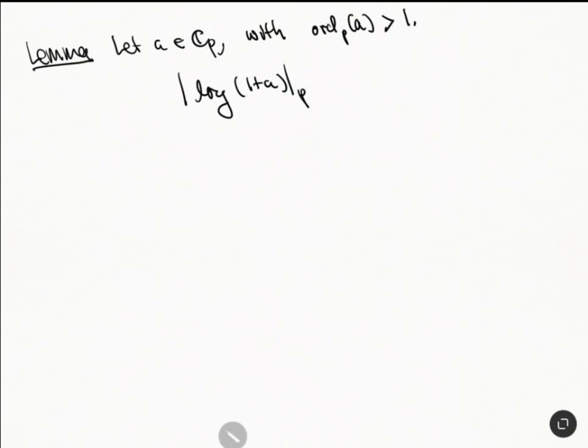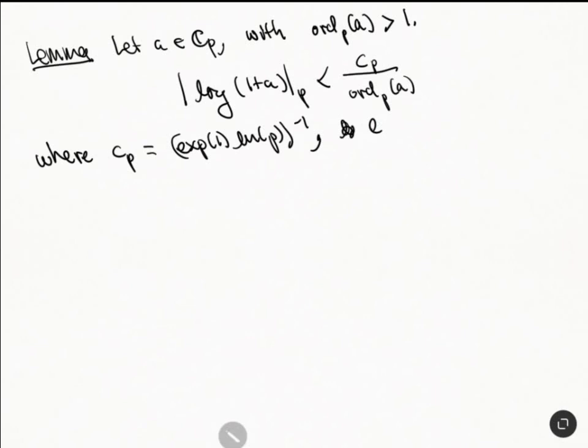So the p-adic logarithm of this thing is less than C_p times ord_p(a), some constant that depends on p. Here where C_p is this here, so this is ln, the natural logarithm. By this I just mean 2.718281, I'm not writing e because I'm saving that for the ramification. So that's the p-adic logarithm.